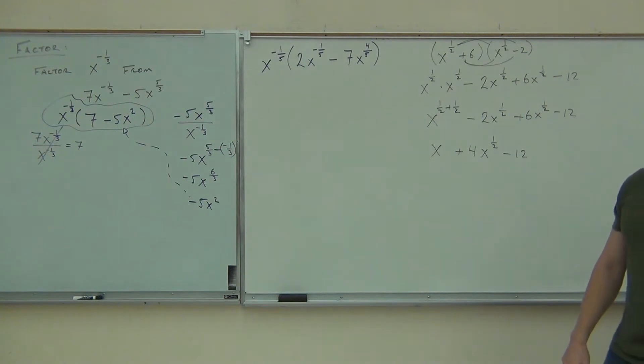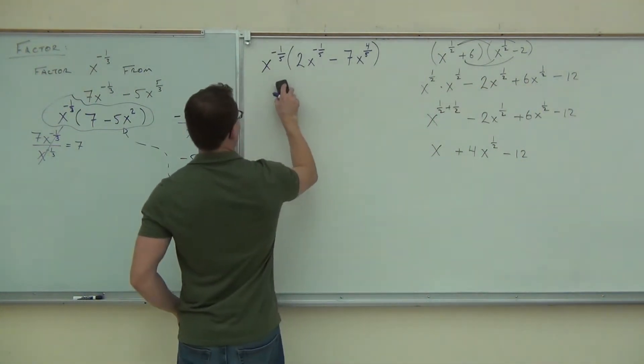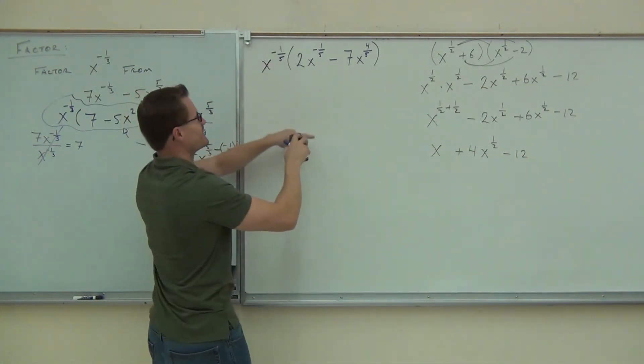x to the negative 1 fifth times 2x to the negative 1 fifth minus 7x to the 4 fifths factor out. Oh shoot, I meant to say factor this out of that.